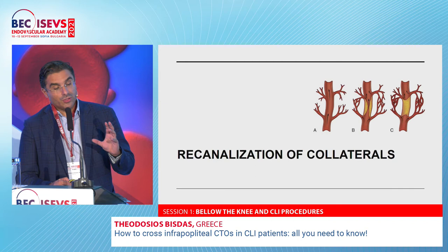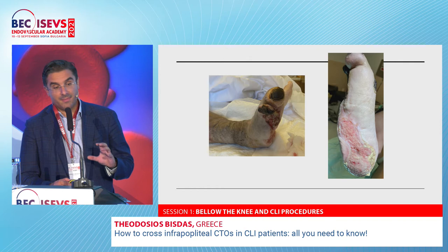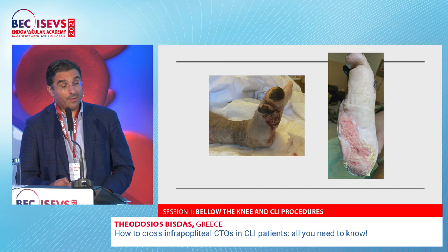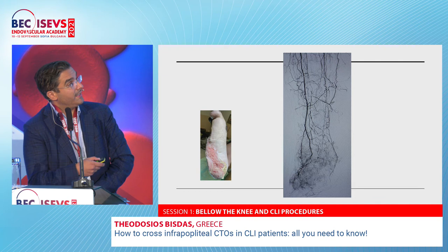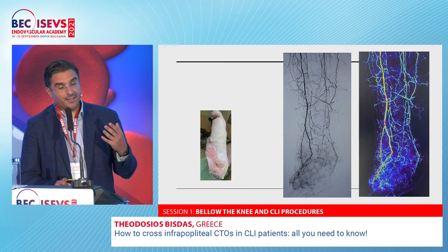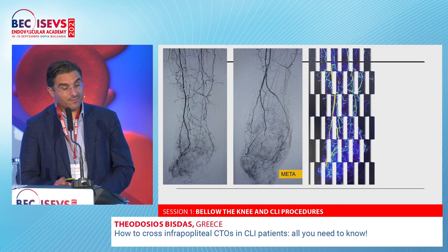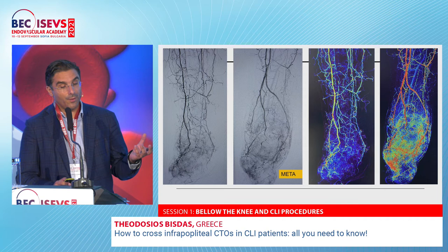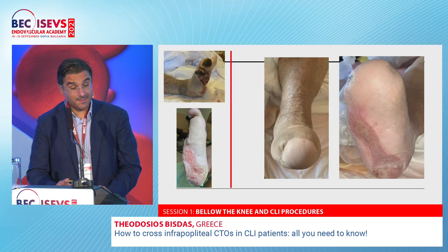Understanding perfusion is also critical — in my opinion, this is the future of CLI treatment, not only recanalization. Here is a case where everybody said the leg should be amputated, but it was the patient's only leg. Angiography looked seemingly adequate, but the peroneal artery was still occluded and the connection to the posterior tibial artery was missing. We perform spectroscopy in Athens to assess forefoot temperature — after reopening that vessel, you can see the dramatic difference in forefoot perfusion, leading to nice healing with a metatarsal amputation and skin transplantation at six months.